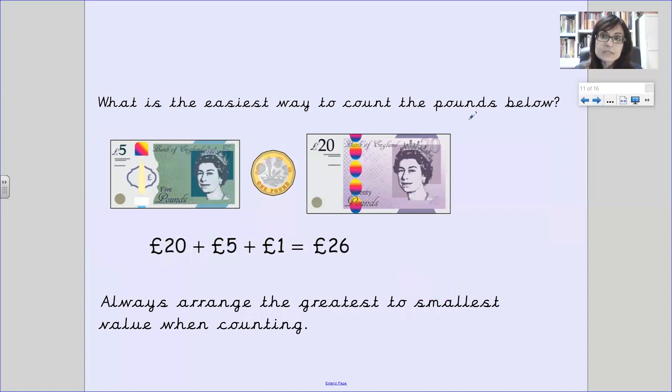What's the easiest way to count pounds below? So, we have a five pound note, a one pound coin and a twenty pound note. And as you can see, we've added the largest first twenty pound note, followed by the five pound note and then the one pound coin, which makes twenty six.